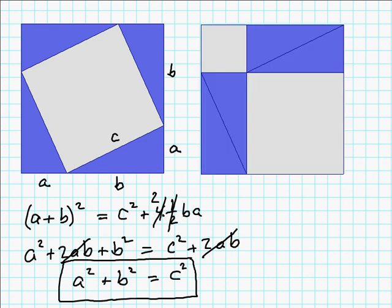Interestingly, we can turn this into a geometric proof if we simply rearrange the four triangles. So now all I've done is I've taken two of the triangles and put them in one corner, two, put them in the other corner.